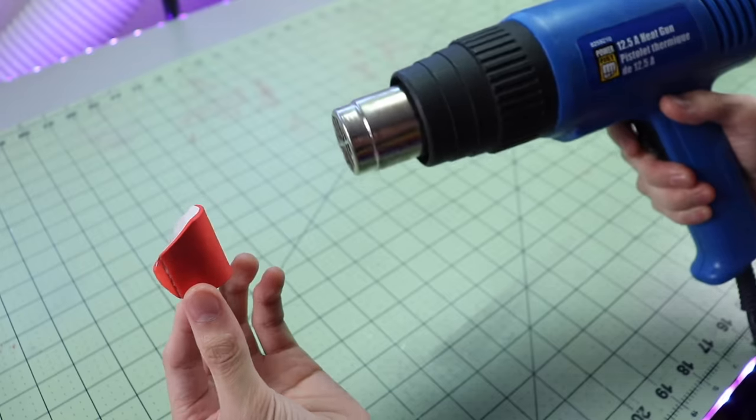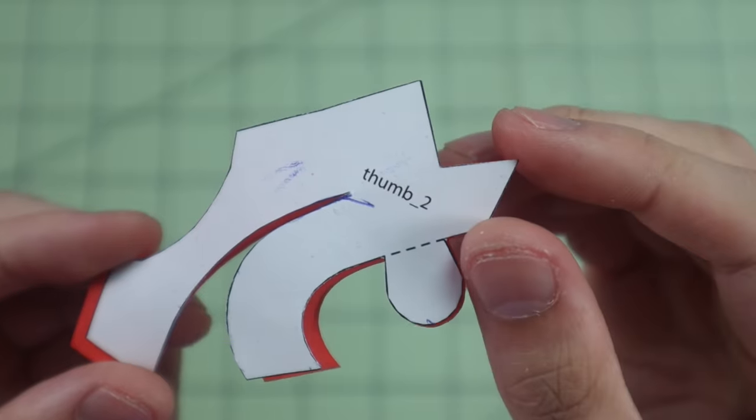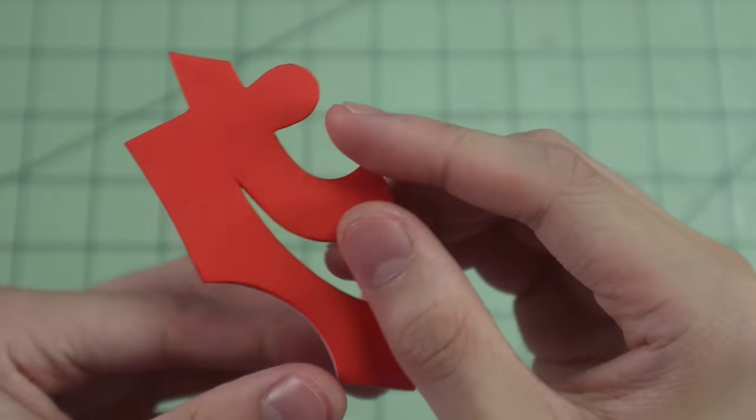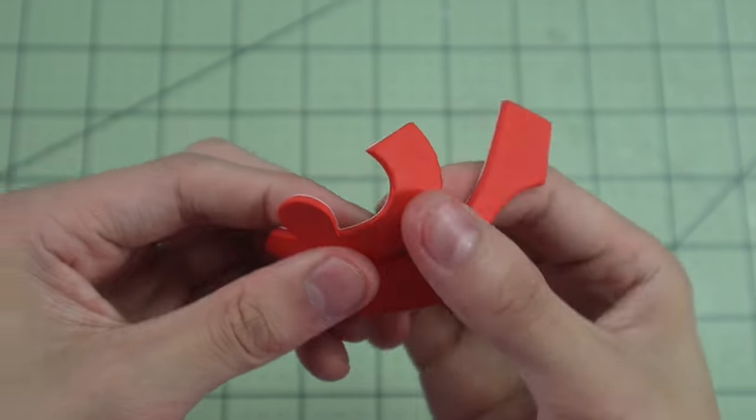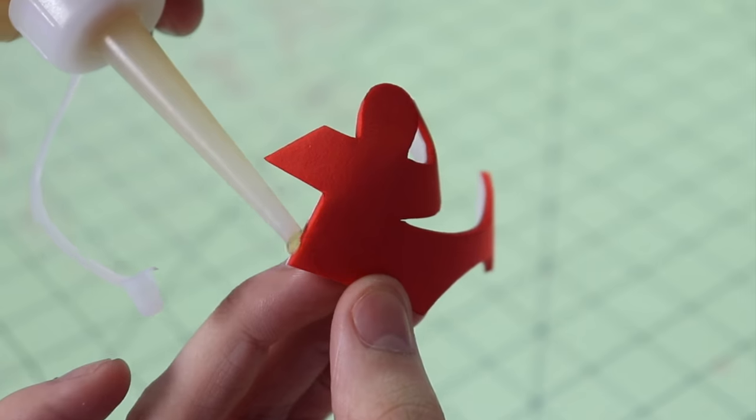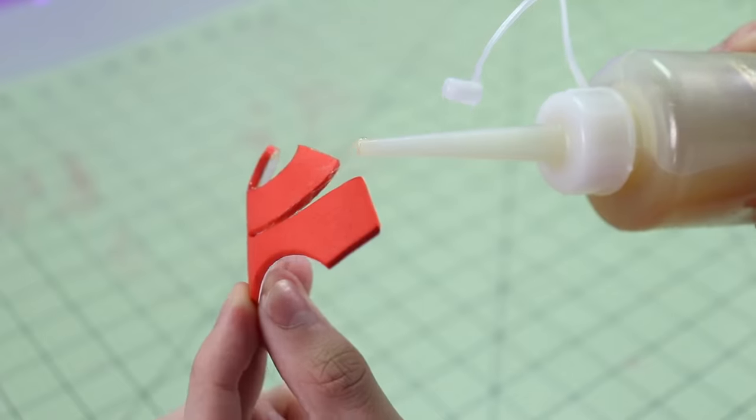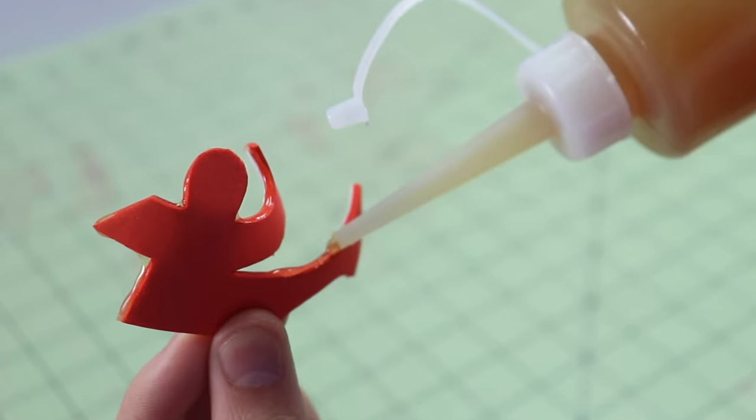This is kind of optional, but if you have a heat gun, you can heat up the foam a little bit, and that will make the foam less porous, which makes the surface more suitable for paint. Here I have the piece labeled as thumb two, which has a bit more of a complex shape, but the process is similar. I start by bending it so it can start to take shape, and then I can apply contact cement to the edges, just like we did on thumb one.